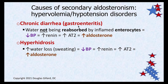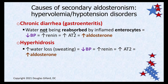Chronic diarrhea is another cause. If you pick up a parasite and have chronic diarrhea, enterocytes are irritated and not reabsorbing water — think of the intestine just like the distal convoluted tubule and collecting duct. A lot of water is lost in fecal material; that decreases blood pressure eventually and turns on the RAAS, ultimately increasing aldosterone secretion.